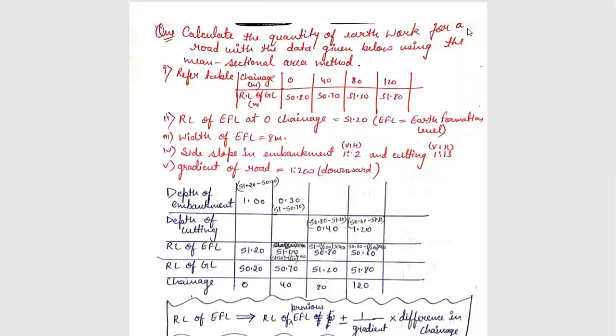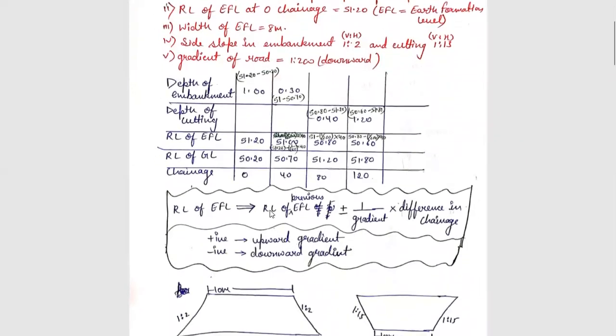We will discuss the embankment and cutting side slopes, and the gradient. The formula for EFL becomes: previous EFL plus or minus one upon gradient into difference in chainage.